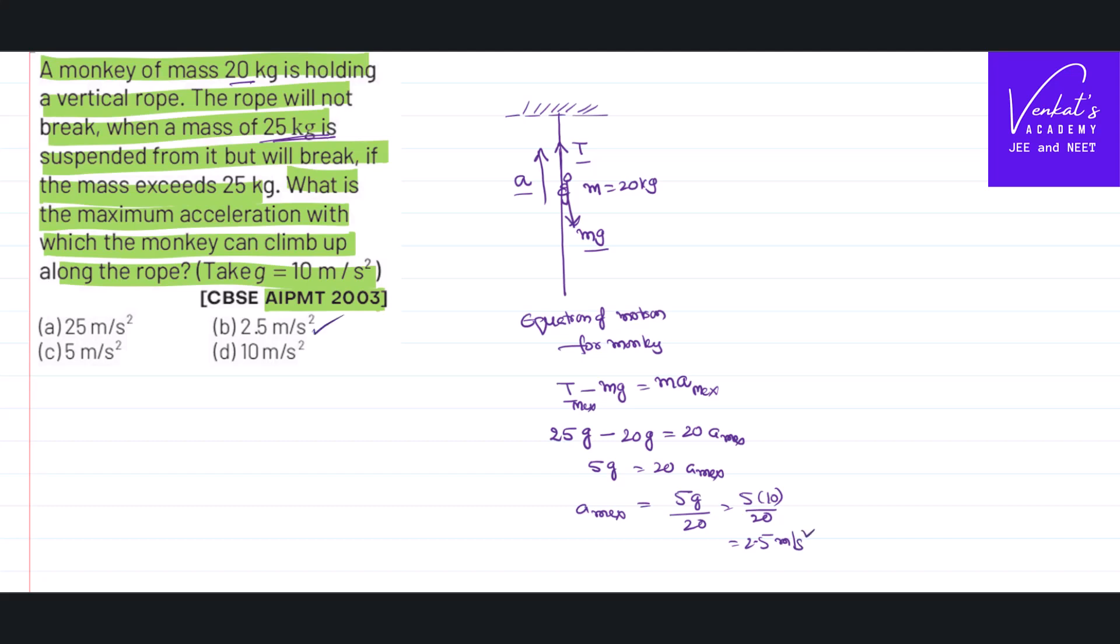So the monkey can go up with an acceleration of 2.5 meters per second square. If the monkey tries to move more than that, then the tension will increase and the rope will break. So there is no upward movement possible. That is how we have to solve the problem.